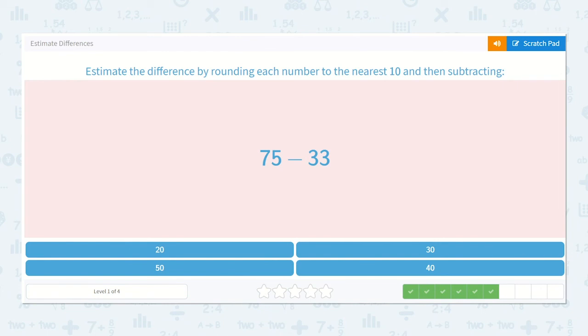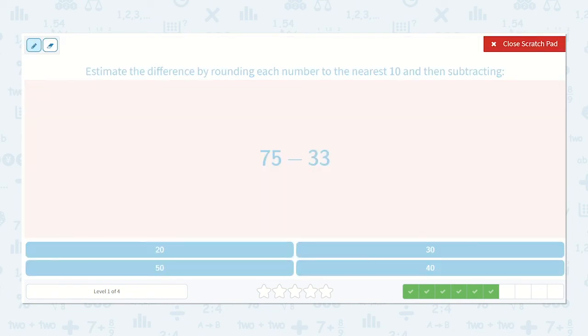Estimate the difference by rounding each number to the nearest 10, and then subtracting. So 75 will round up to 80, and then we will subtract 30, because 33 will round down to 30. 80 minus 30 is equal to 50.